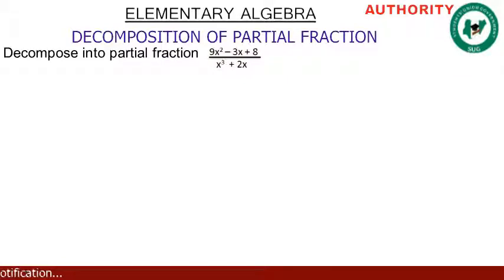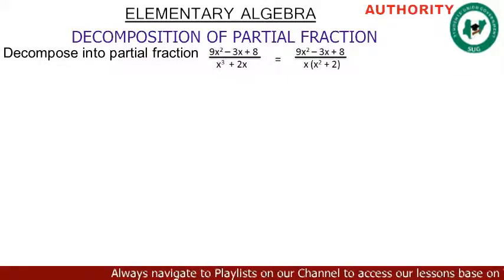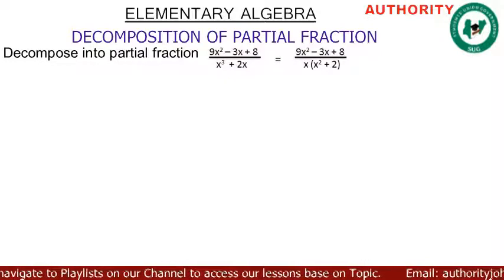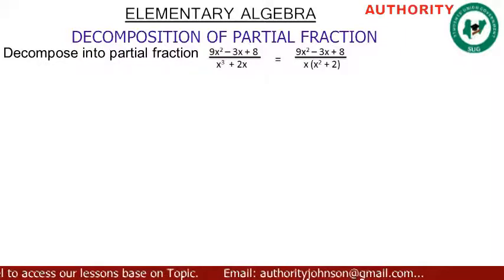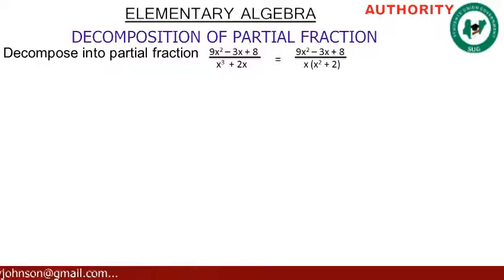We have (9x² - 3x + 8) / (x³ + 2x). There is something we can do with the denominator — let's factorise it. Factoring out x from x³ gives x², and factoring x from 2x gives 2, so we get x(x² + 2).